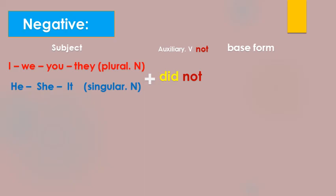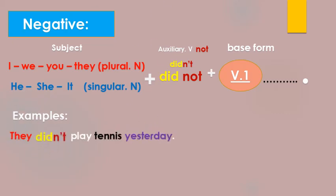Didn't, then here with the base form, the first form of the verb. Then we put full stop. Here we have examples: they didn't play tennis yesterday. Another example: he didn't play tennis yesterday. So in the question form and in the negative form, we use the first form of the verb.